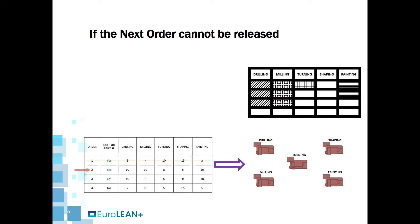In the meantime, we can consider order 3. Looking at the planning board, the cards it requires are available, so those cards are removed from the board and attached to order 3 for its release into the system.